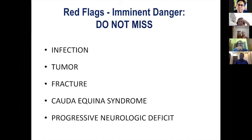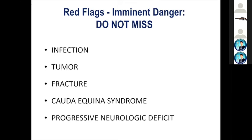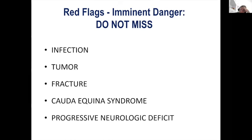When taking history, the most important thing — especially in a spine patient — is that we should not miss the imminent danger or red flags, which are: infection, tumor, fracture, cauda equina syndrome, and progressive neurological deficit. We cannot miss these. Whenever we are taking a history of a spine patient, we should rule these out during the history itself.